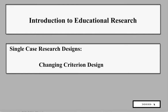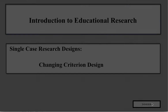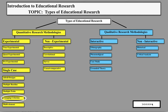This is one of those designs — the changing criterion. To put it in perspective within the big picture of types of educational research: we have the quantitative and qualitative paradigms. Under quantitative we have experimental and non-experimental, and under experimental we have single case experimental, and within that we have the changing criterion design.